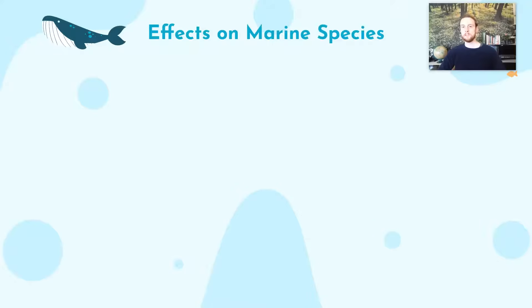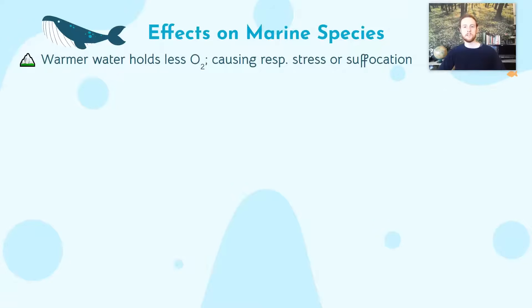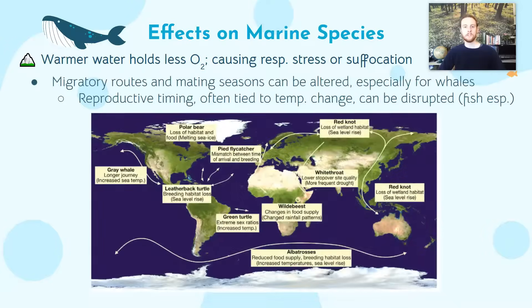Now we'll look at the effects of ocean warming on marine organisms. The first thing we need to know is that warmer water holds less oxygen. This is going to be really important for species that require a large amount of oxygen, especially fish and large mammals like whales. This can cause respiratory stress or suffocation if the water gets so warm that there's not enough oxygen for the respiration of these animals.